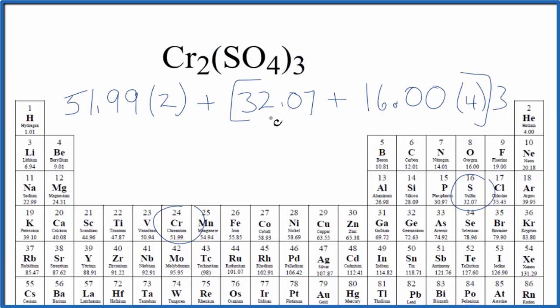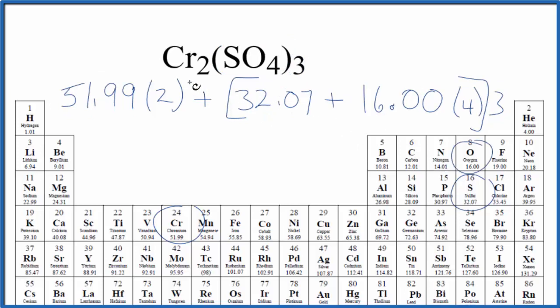When we add all of this up we end up with the molar mass for Cr2(SO4)3, the chromium(III) sulfate, of 392.19 and the units are grams per mole. That means if we have one mole of chromium(III) sulfate it'll weigh 392.19 grams.